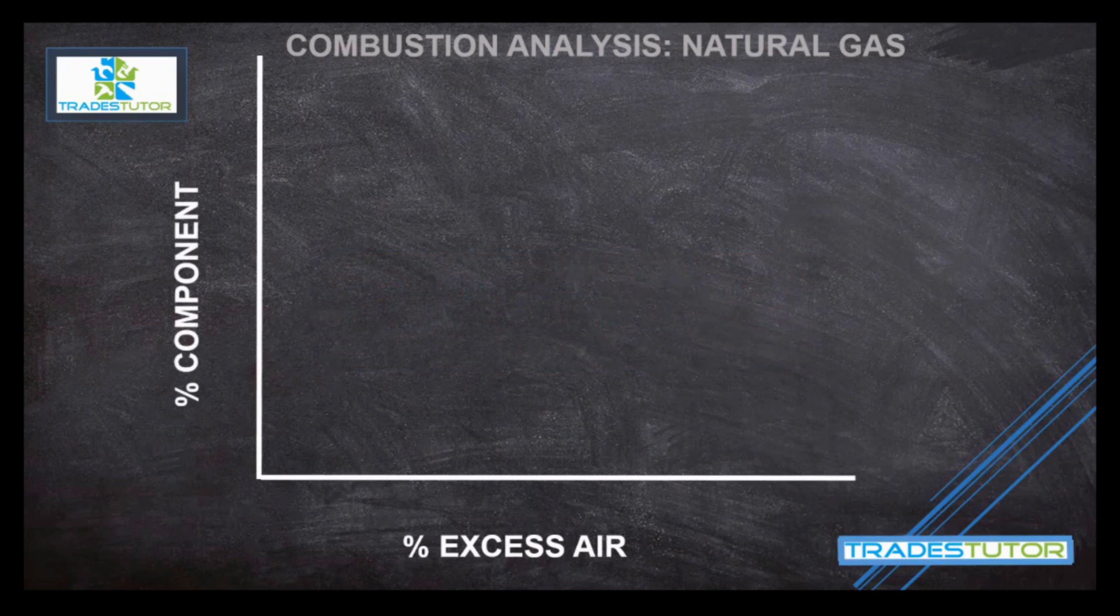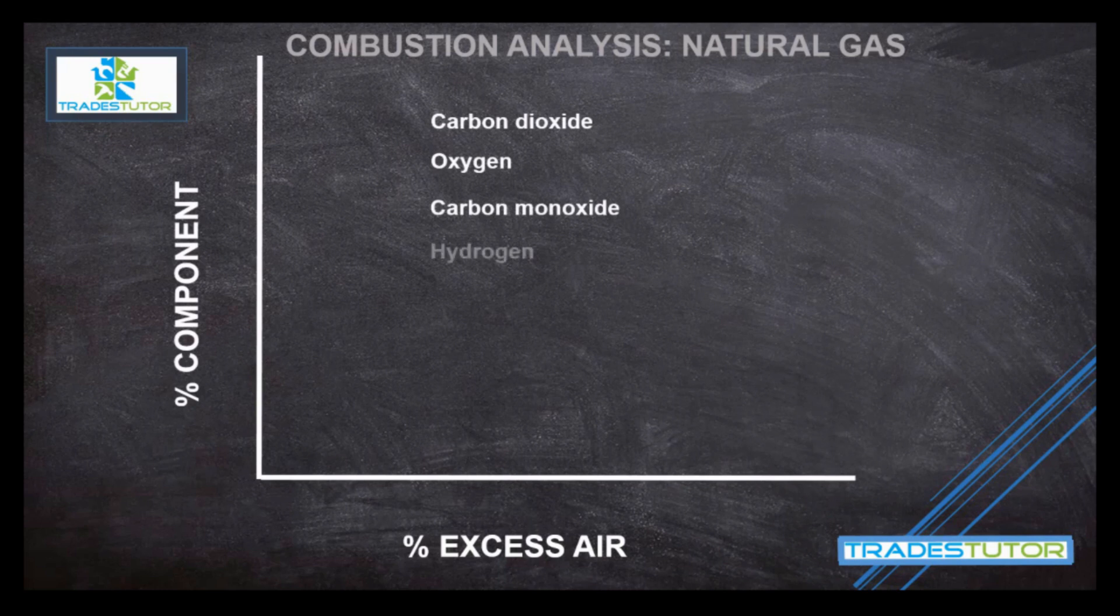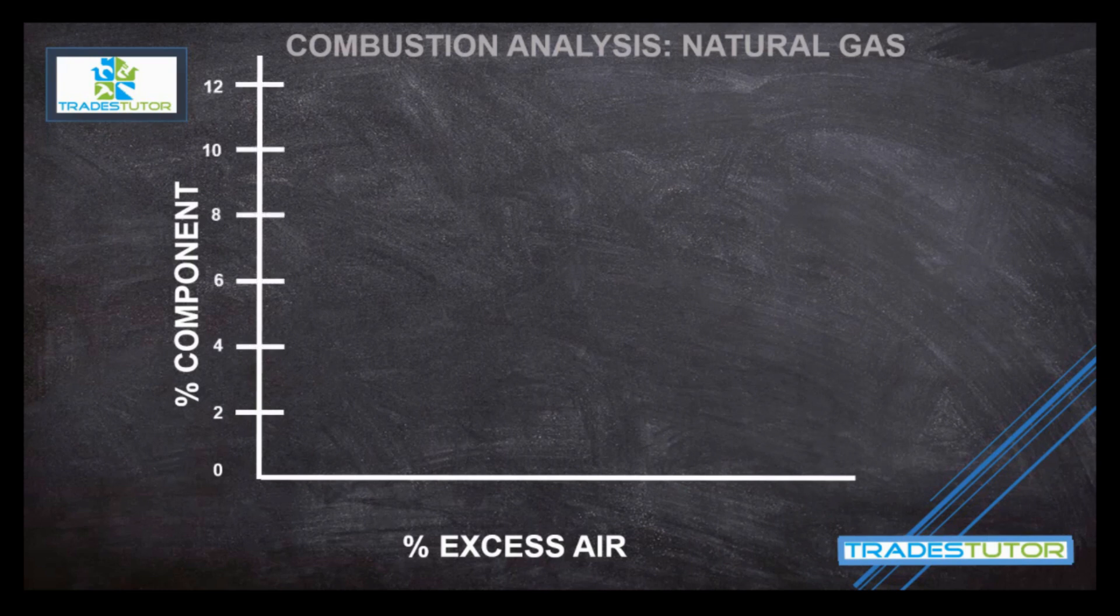Now the components we're talking about are carbon dioxide, oxygen, carbon monoxide, hydrogen, and methane. And really the two most, what we're looking for the most is carbon dioxide and oxygen. And if there's too much carbon monoxide, that would be an issue as well. So if we go down to the left-hand corner, right where they meet, we'll start with zero. And the percent component goes 2, 4, 6, 8, 10, 12. And we'll see how that works in a bit.